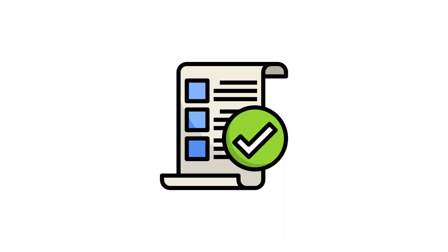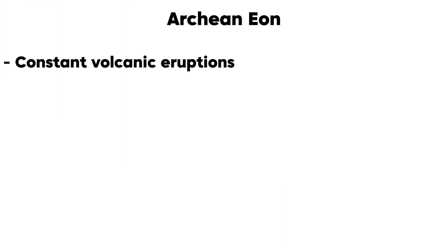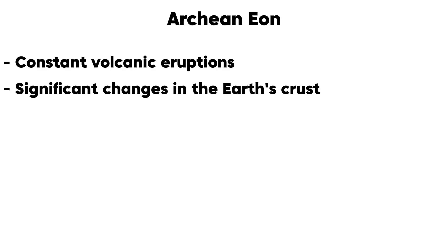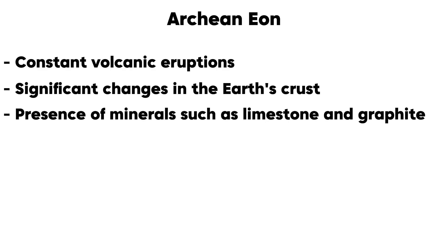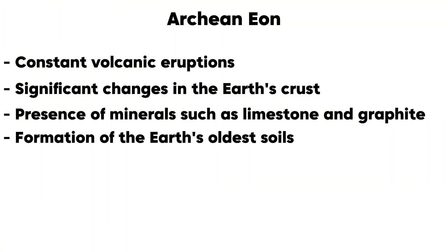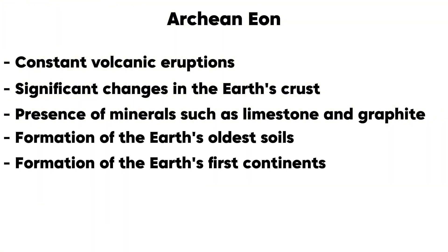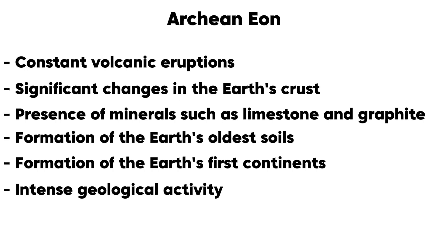Here are some of the main characteristics of the Archean period: constant volcanic eruptions, significant changes in Earth's crust, presence of minerals such as limestone and graphite, formation of Earth's oldest soils, formation of Earth's first continents, and intense geological activity.